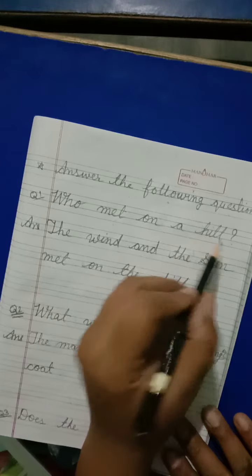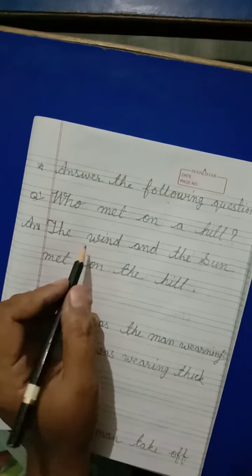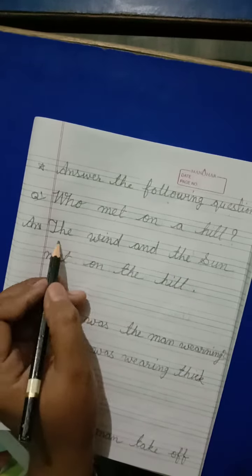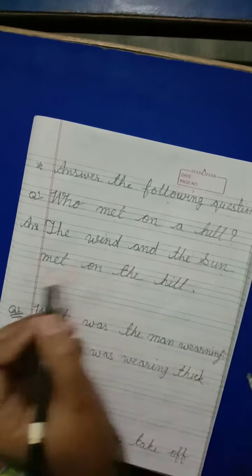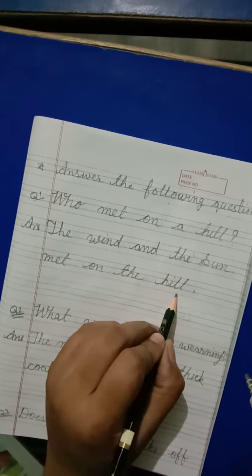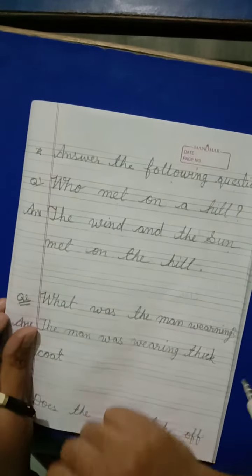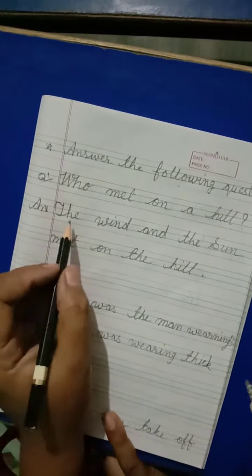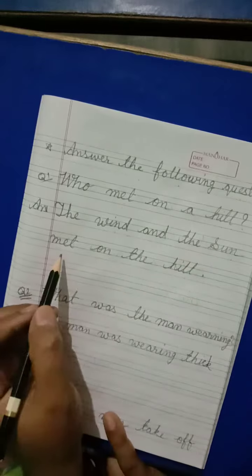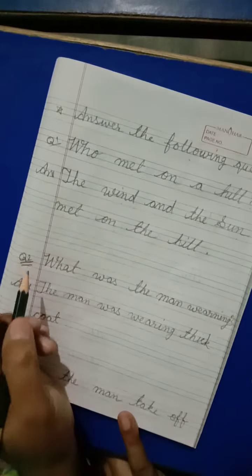Who met on a hill? Hill पर, पहाडों पर कौन मिले थे? The wind and the sun met on the hill. तो hill के उपर, wind and the sun met on the hill.